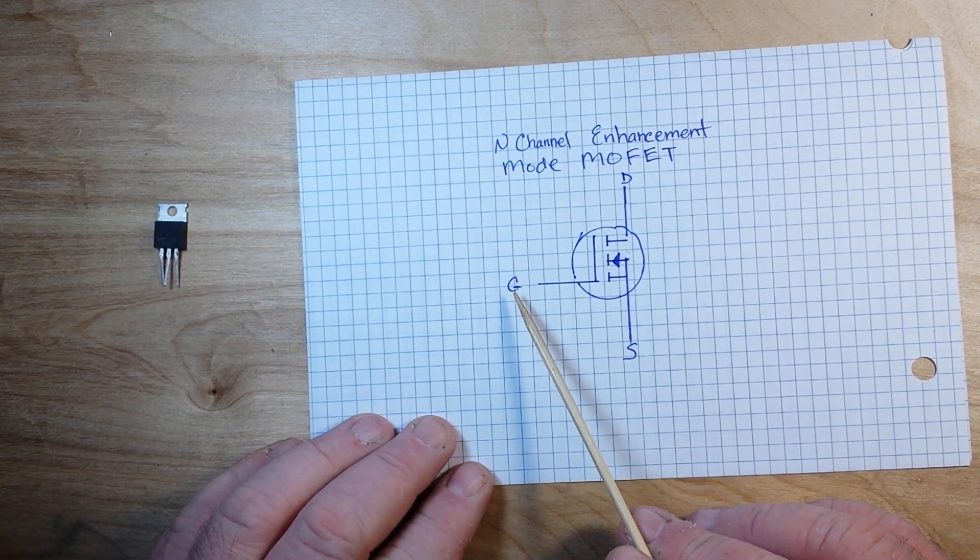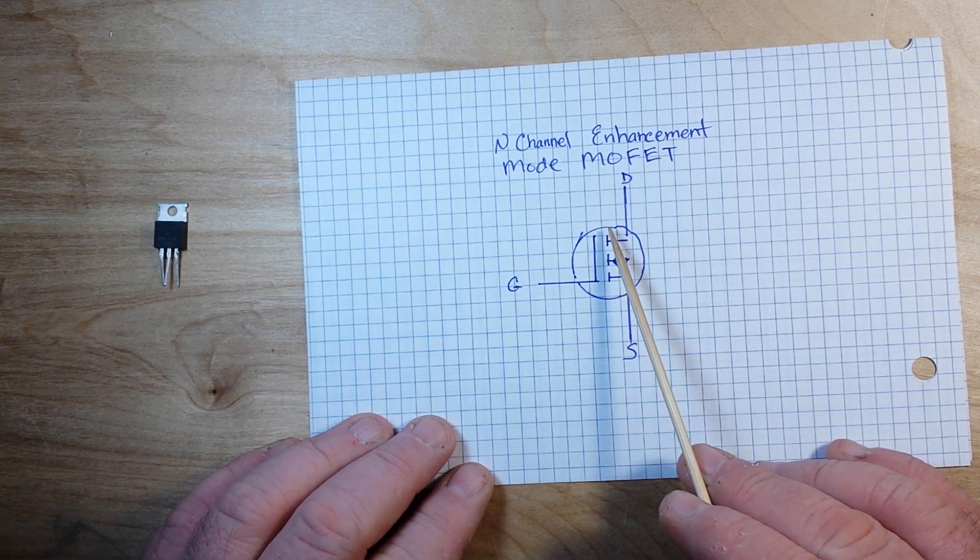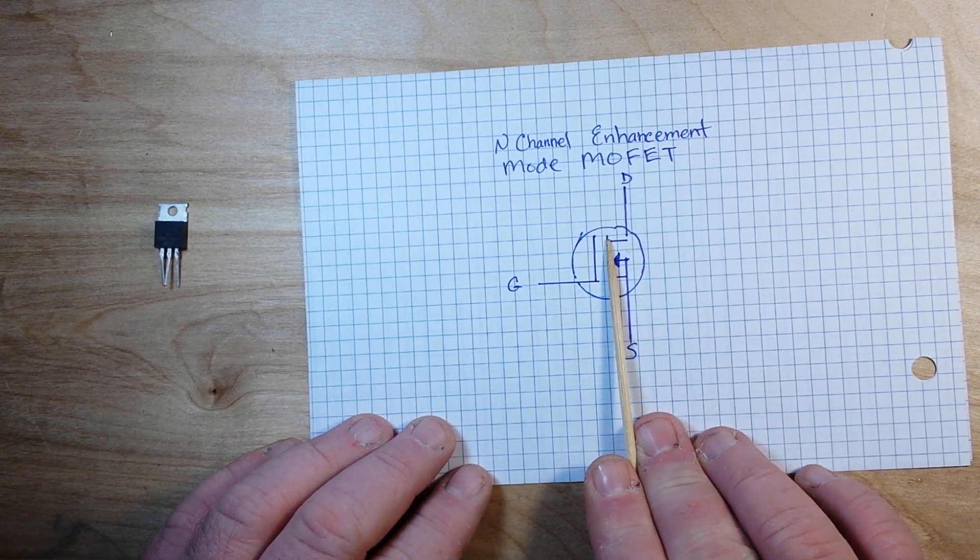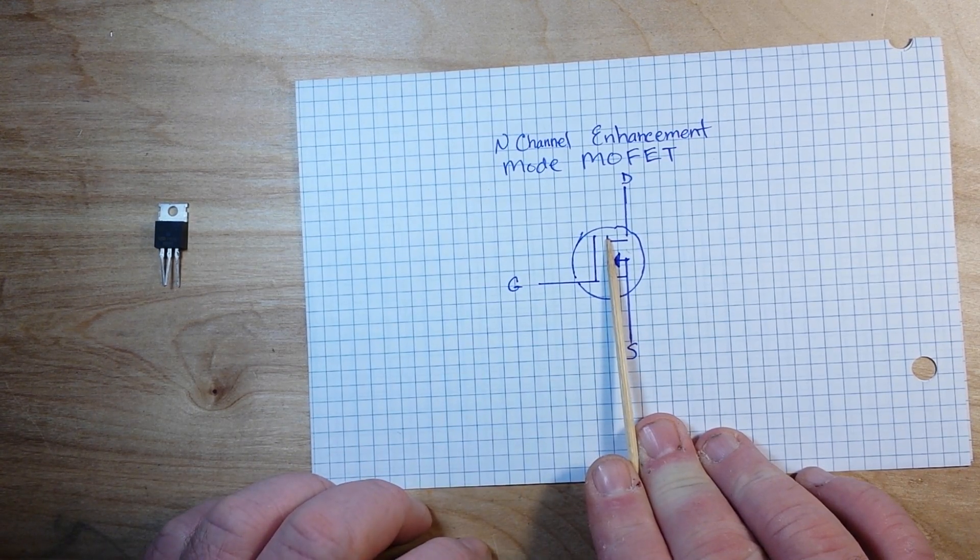And you see these three small dashed lines here? If they were a solid line, well that pretty much looks like the symbol for a capacitor, doesn't it? And it kind of behaves as a capacitor.